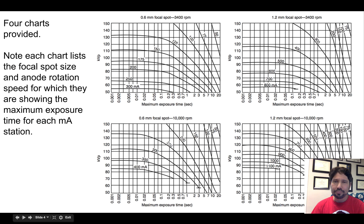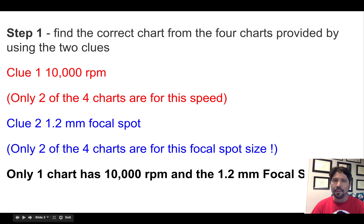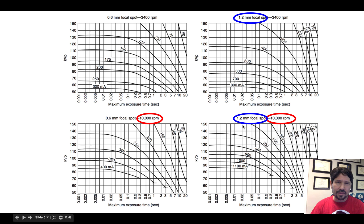And the question asks, find the chart that's talking about 10,000 RPM and 1.2 millimeter focal spot. So you need to read the chart as well as the problem, especially when they're multiple charts. So there's only one chart that has both the large focal spot and the fast spinning anode rotation speed. So we'll focus only on this chart as we move forward with this problem.